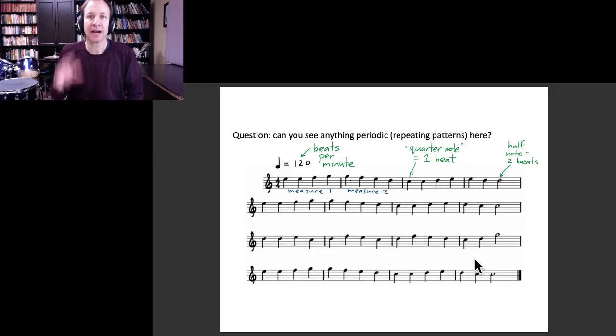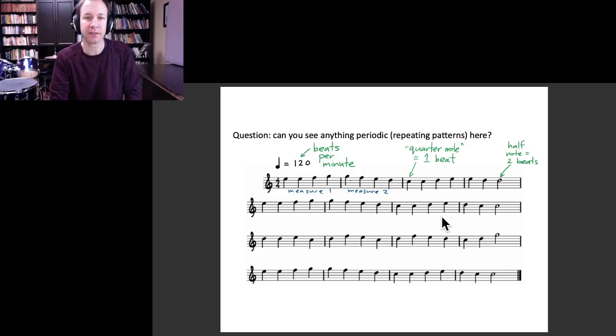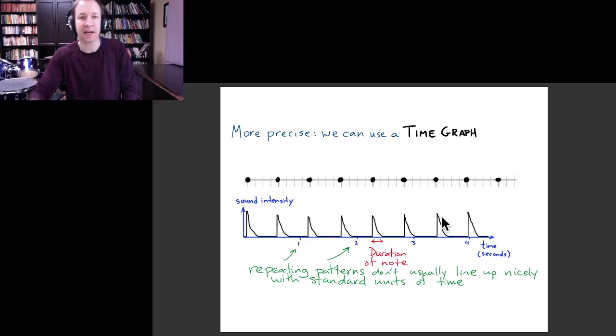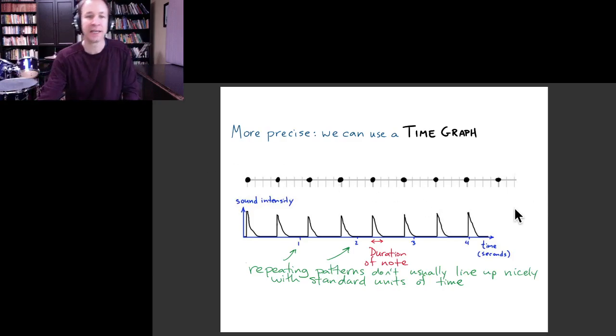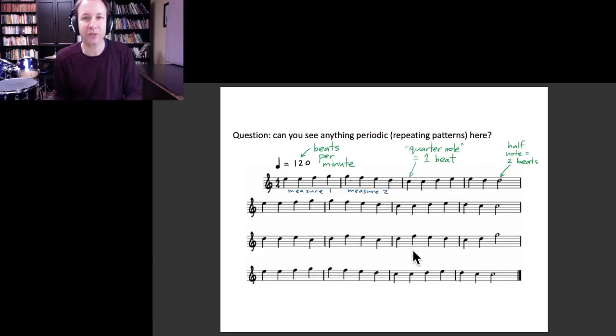And so I want you to, as an example of this, think about this particular piece of music. OK, so before we ask this question, let me just talk about this musical notation. So I've talked about two ways of representing events in time. One of them is a timeline. The other one is a time graph. In music, the way that we usually represent events would be this musical notation. And so if you're not familiar with it, it's almost like a timeline.